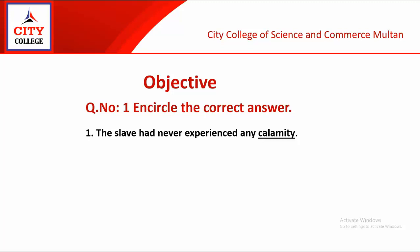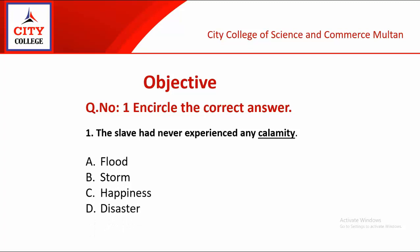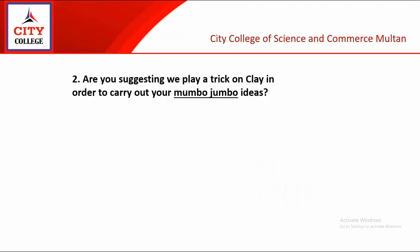The slave had never experienced any calamity. The underlined word is 'calamity' and the given options are flood, storm, happiness, disaster. The correct option is D, disaster.